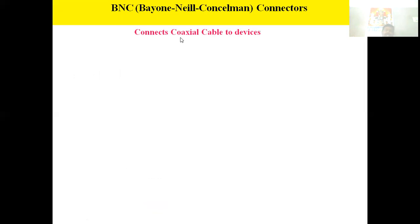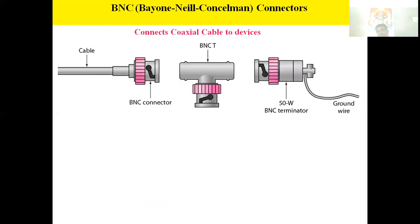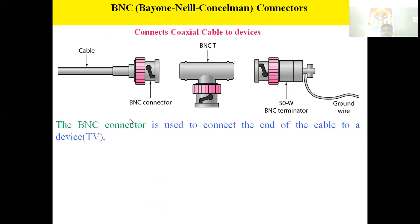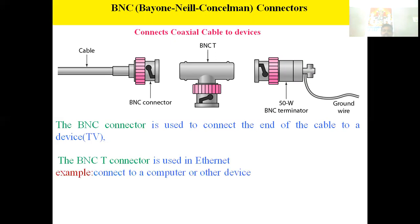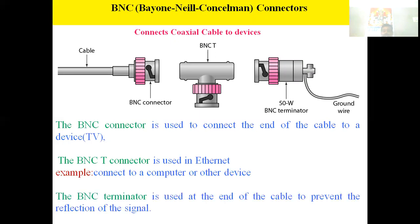BNC connectors — Bayonet Neill-Concelman connectors — are used to connect coaxial cable to devices. There are three types: the BNC connector, used to connect the end of the cable to a device; the BNC T-connector, used in Ethernet; and the BNC terminator, used to prevent reflection of signals.